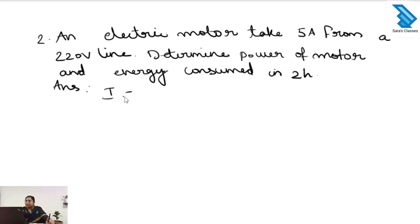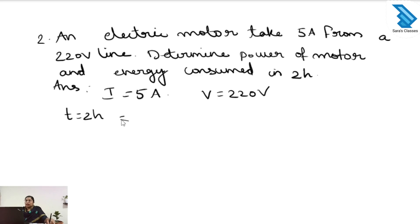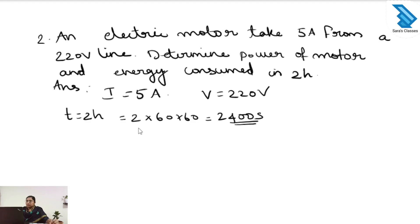What is given in the question? The current is given as 5 ampere and the voltage is given as 220 volt. The time is given as 2 hours, so we have to convert that into seconds. We multiply 2 by 60 into 60, giving us 7200 seconds. Next we have to find the energy. The equation to find energy is E equal to P into T. The time is given but the power is not given in the question, so first we have to find the power.